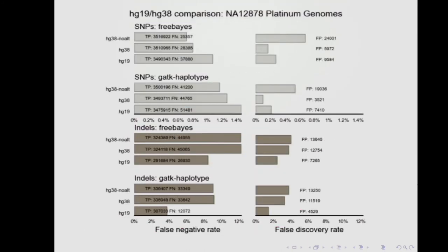Just to be practical about what BCBio outputs for validation: the two sort of metrics are false negative rate and false discovery rate. False negative rate is one minus sensitivity — how well you're detecting mutations. False discovery rate is one minus precision — how many false positives you're generating. You do one minus because a lot of these metrics are at 99.9% sensitivity, so plotting directly gives you a flat graph and you can't tell the difference between anything. By inverting, the smaller the bars, the better off you are.